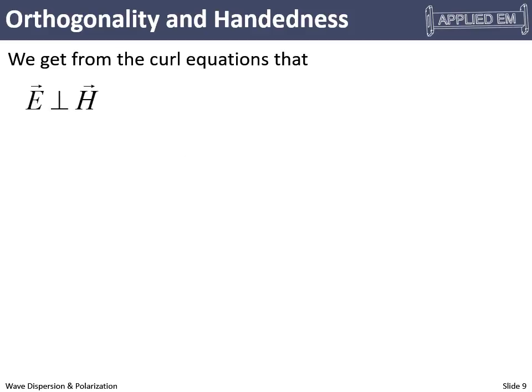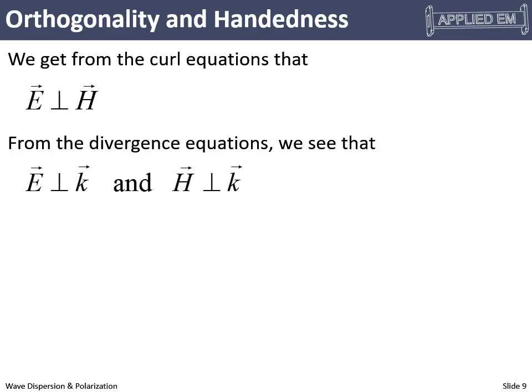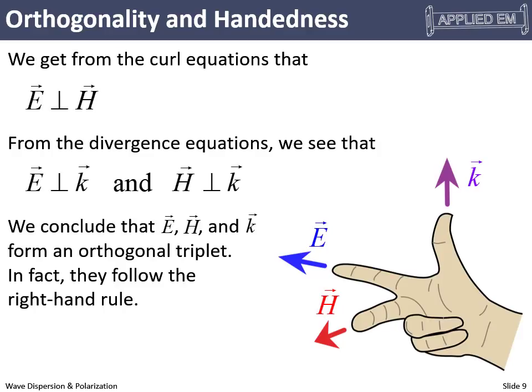From the curl equations, we can show that the electric and magnetic fields are perpendicular to each other. From the divergence equations, we can show that the electric field is perpendicular to the direction the wave is going, and the magnetic field is also perpendicular to the wave direction. So E, H, and K are all mutually perpendicular and follow the right-hand rule: thumb points in the direction the wave is going, index finger in the direction of the electric field, and middle finger in the direction of the magnetic field.